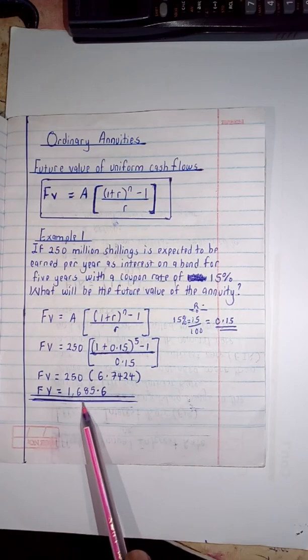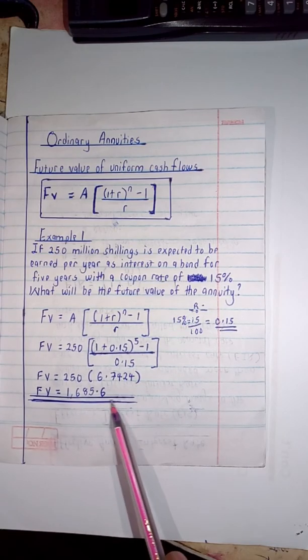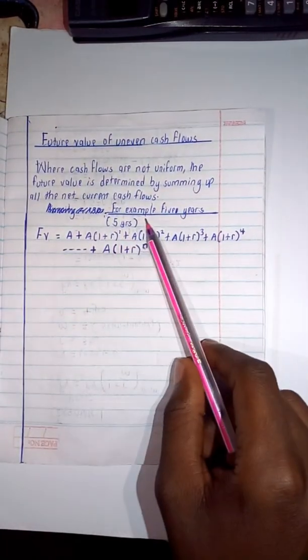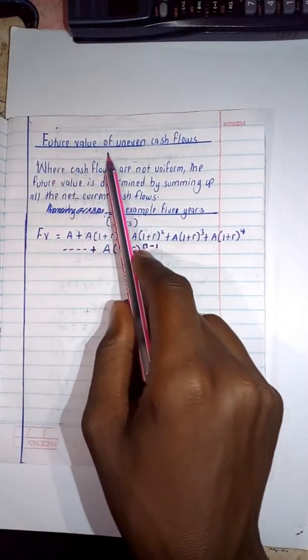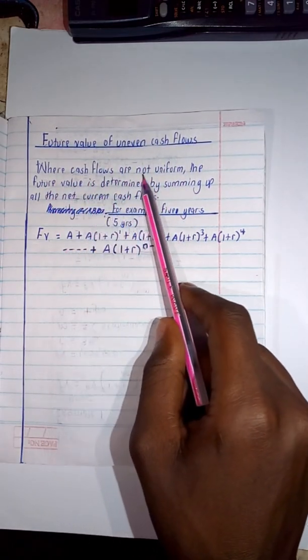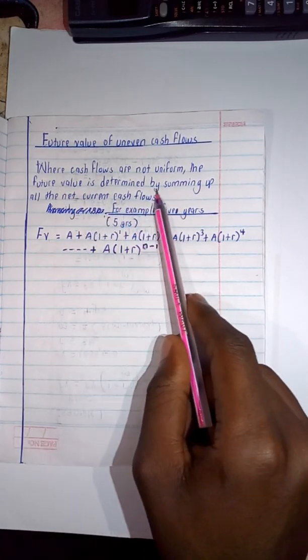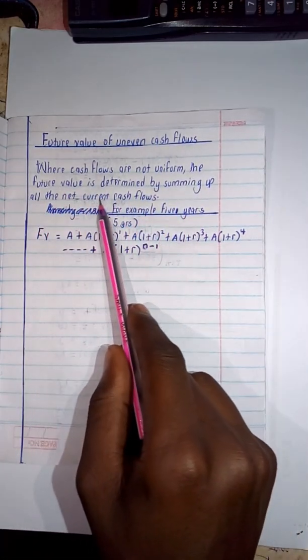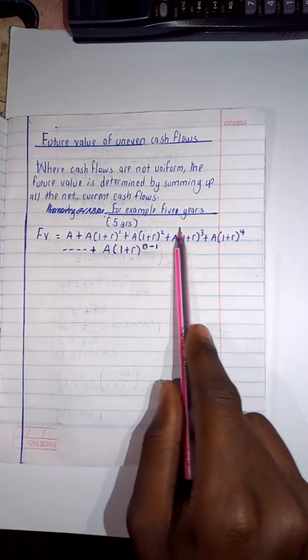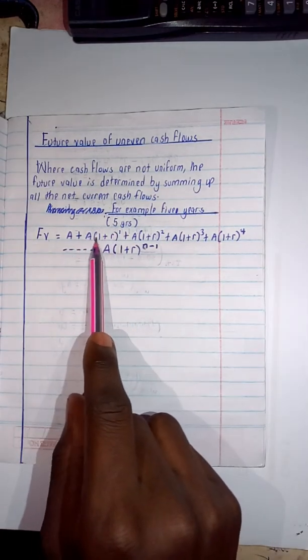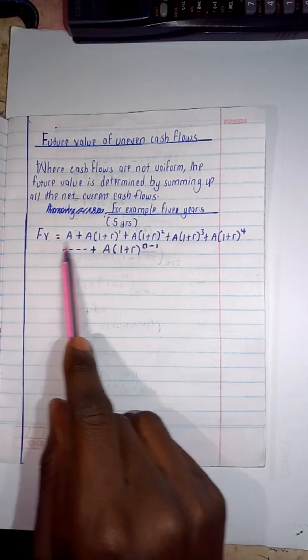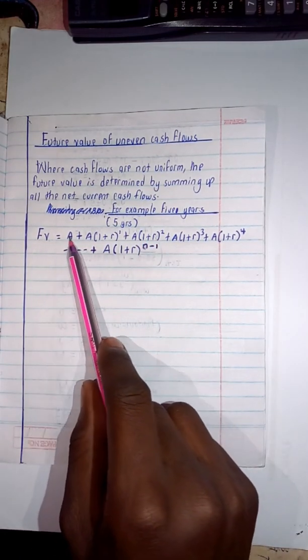Then after that, I'm having the future value of uneven cash flows. Now with this, where cash flows are not uniform, the future value is determined by summing up all the net current cash flows. For example, if you are being given five years and they are uneven and they are occurring for five years, you're going to say future value is equal to the annuity plus annuity(1+r).